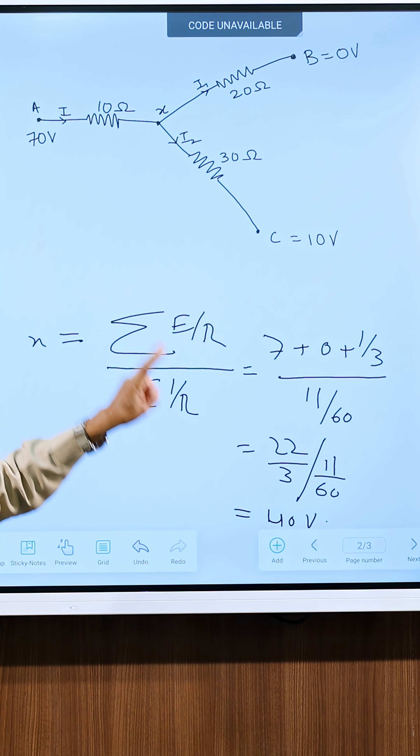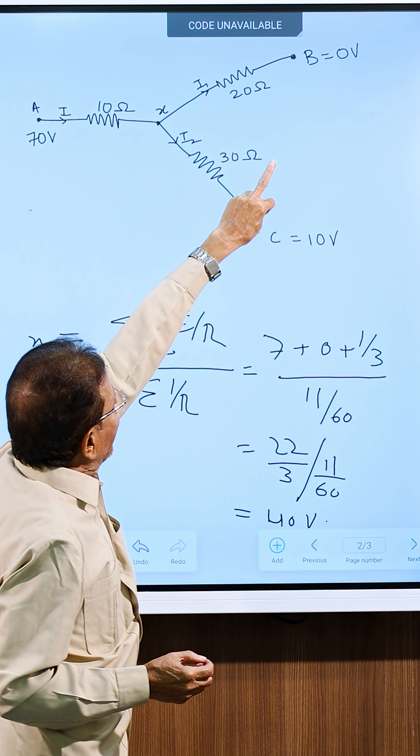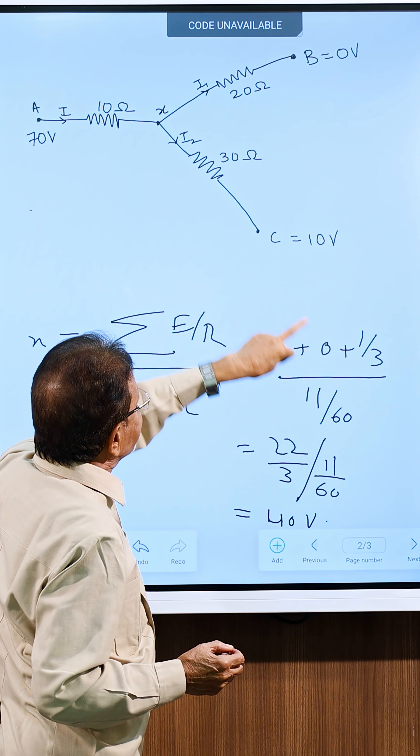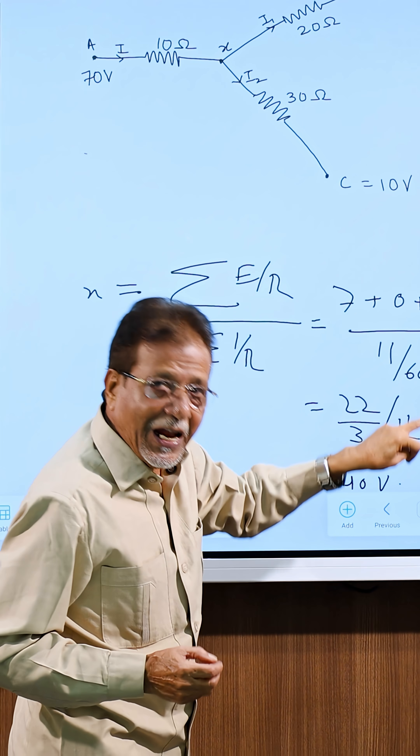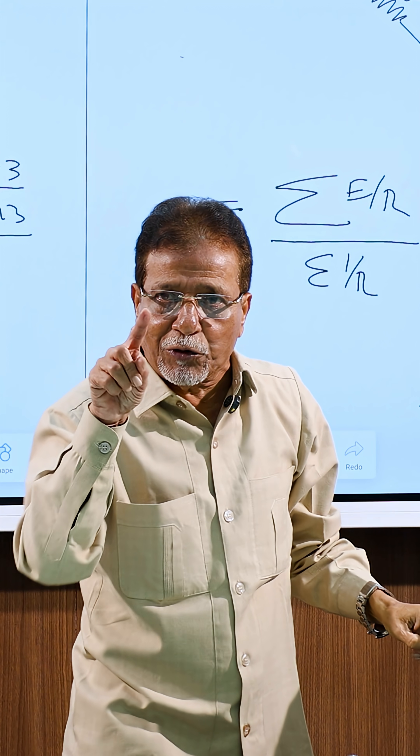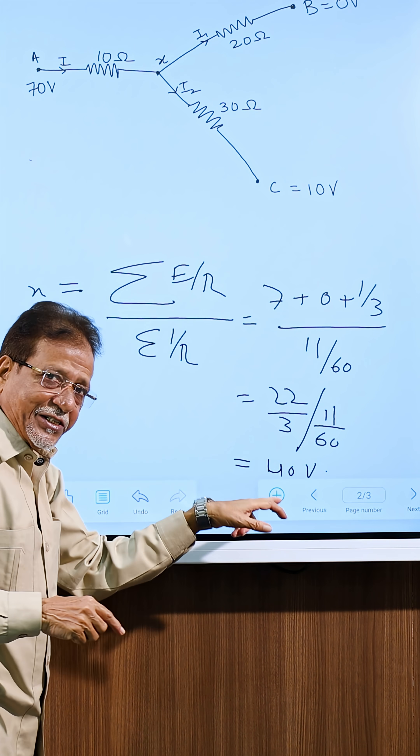What will be the values? In this case, E upon R will be 70 upon 10, that is 7. Here E upon R will be 0 upon 20, that is 0. Here E upon R will be 10 upon 30, that is 1 upon 3. And 1 upon R1 plus 1 upon R2 plus 1 upon R3 will be 1 upon 10 plus 1 upon 20 plus 1 upon 30. That will be 11 upon 60.